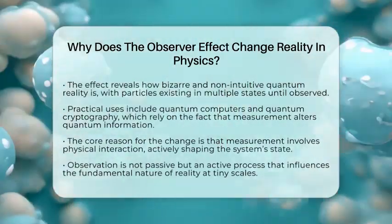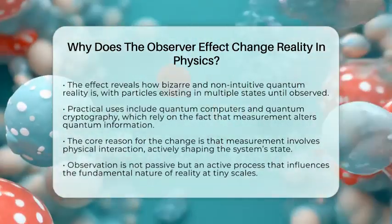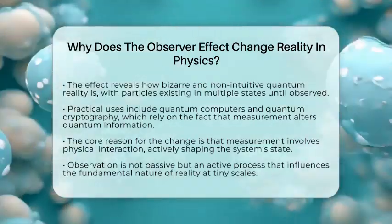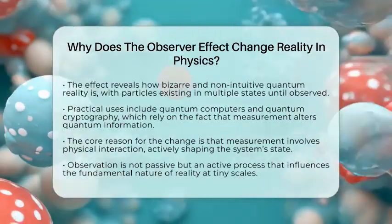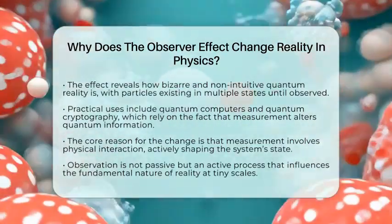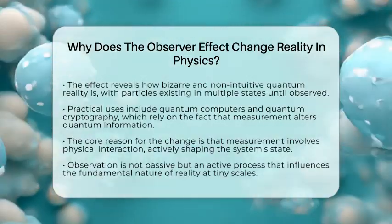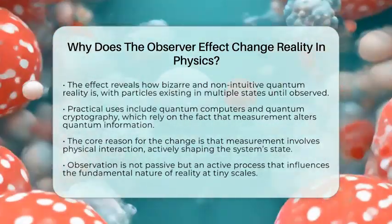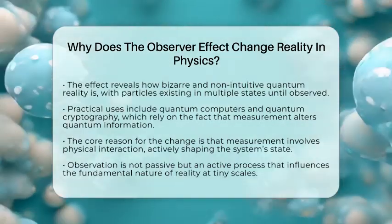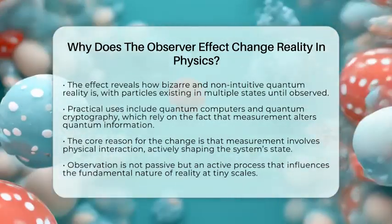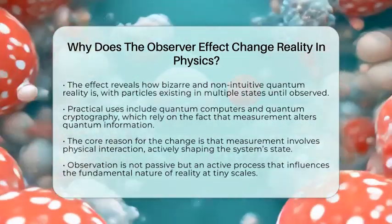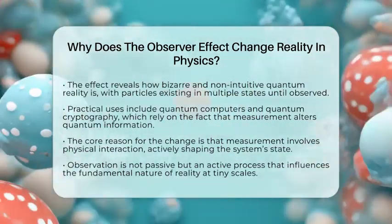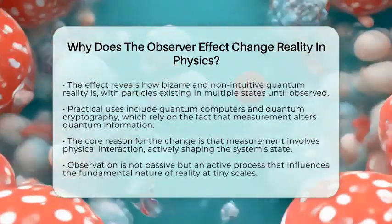In the end, the reason the observer effect changes reality in physics is because measuring a quantum system involves physical interaction. This interaction collapses the wave function from many possibilities into one outcome. It's a weird but fundamental part of how the universe at tiny scales works, showing us that observation isn't just passive — it's an active part of reality itself.